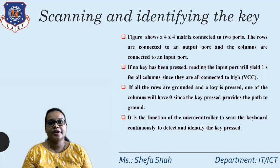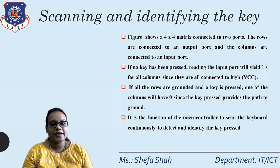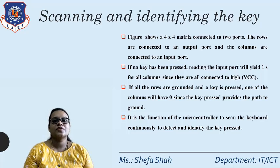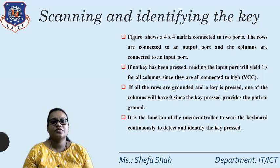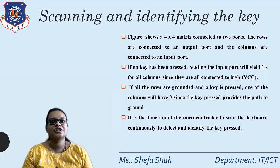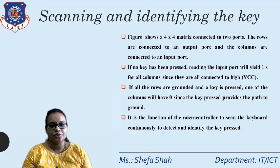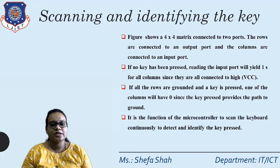All columns and rows will be equal to 1 initially. If a row is grounded and a key is pressed, one of the columns will change to 0. We need to find out by scanning which particular key has been converted from 1 to 0, since the key press connects the path to ground. It is the function of the microcontroller to scan the keyboard continuously and detect and identify the keys.